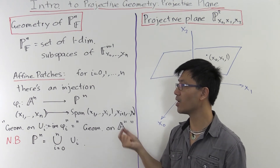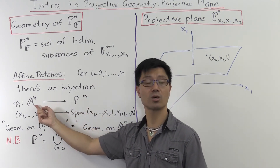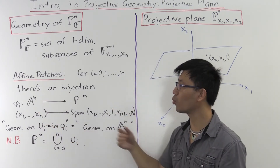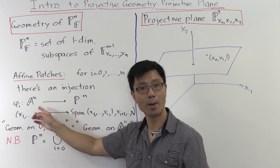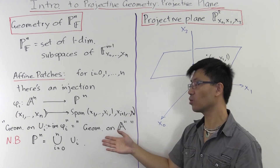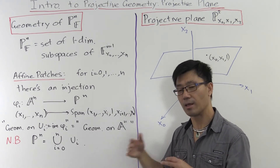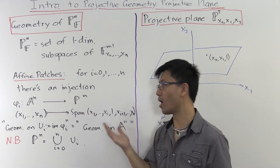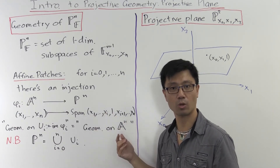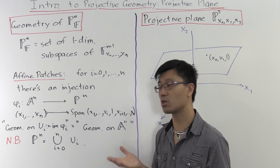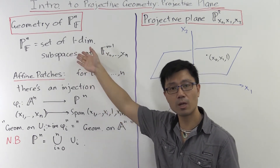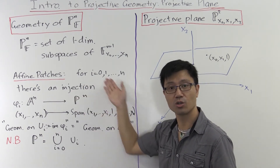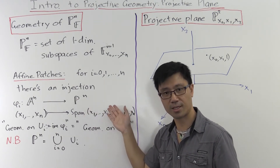The only thing you have to check is whether it mattered which affine patch you worked with. And that's where the gluing comes in — you have to work out how you glue when you go from one patch to another. You can check quite easily that the gluing map is given by an algebraic function. And since it's an algebraic function, it doesn't matter which patch you work with. In particular, algebraic functions are also smooth, so if your field happens to be the real numbers or the complex numbers, you can also patch together to get a real manifold or a complex manifold, as the case may be.